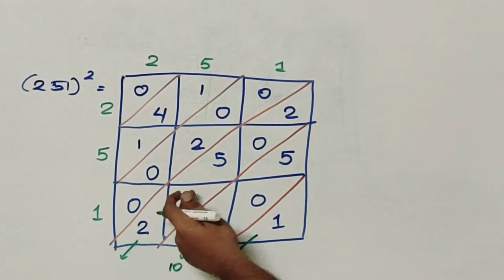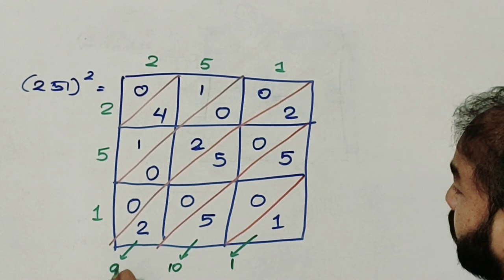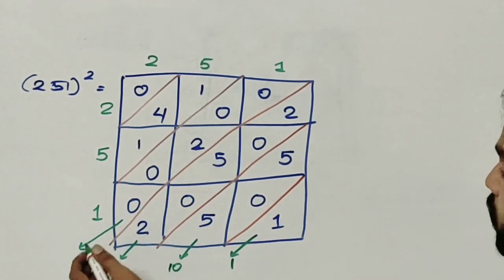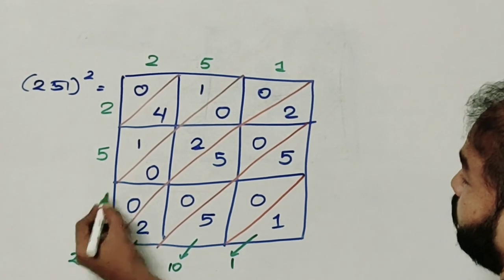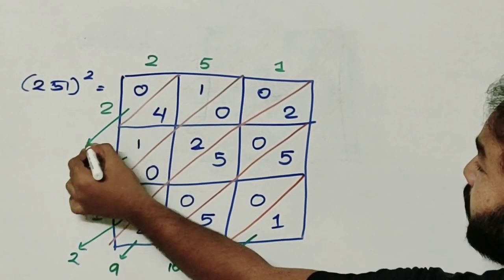This is 2 plus 0 plus 5 plus 0 plus 2, which is 9. The next gives me 0 plus 1 plus 1 plus 0 plus 1, which is 6. And a 0.